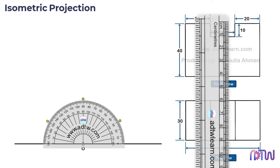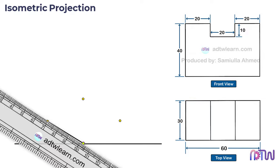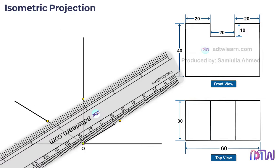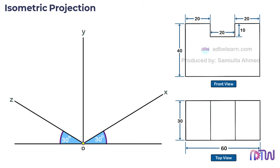Using these points as a reference, draw lines from center point O. This line will be the x-axis, this will be the y-axis, and this line will be the z-axis. We can see the x and z-axis are inclined at 30 degrees and the y-axis is at 90 degrees. These axes are called the isometric axis, and now we can draw the isometric view on this axis.